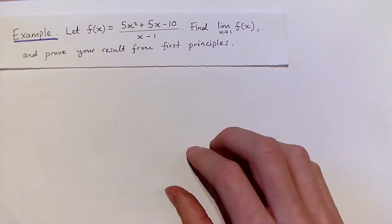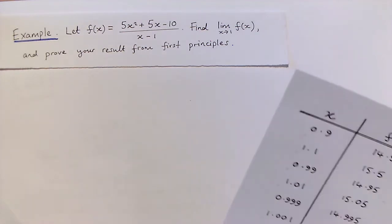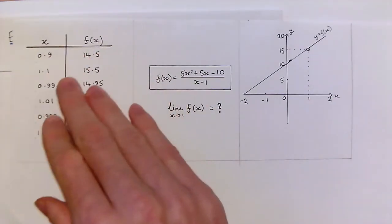Now, it's always a good idea to play around with the function to get some initial idea of how it behaves. For example, we can pick some function values very close to 1 and make a table of those function values, as I've done here.